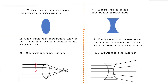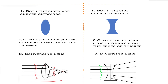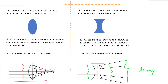In a converging lens, the incident rays on passing through the lens tend to meet at a point, hence they are called a converging lens. Whereas in a concave lens, on passing through the lens the refracted rays diverge, so we can make out the refracted rays are diverging. The concave lens is called a diverging lens because the refracted rays diverge in different directions.